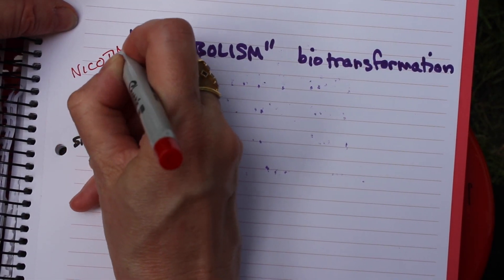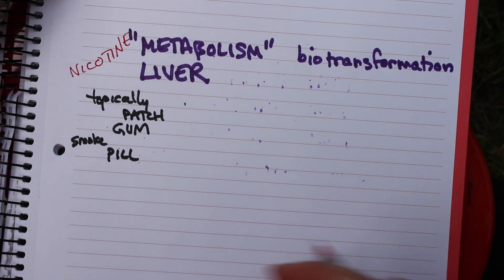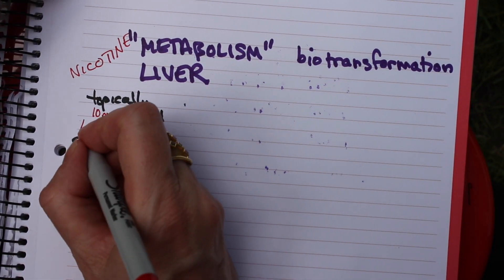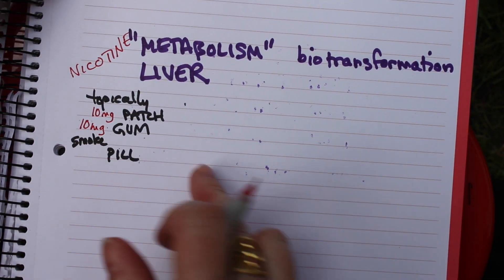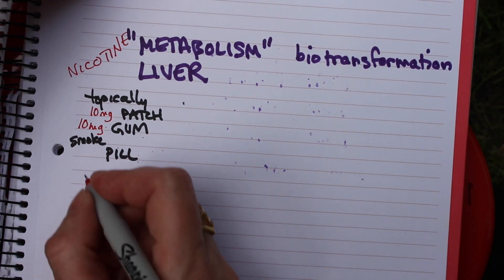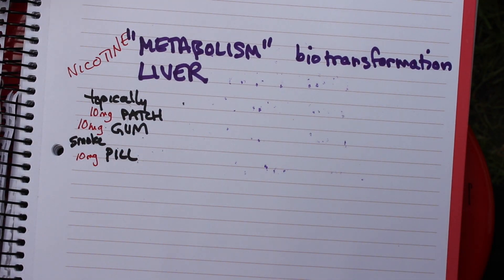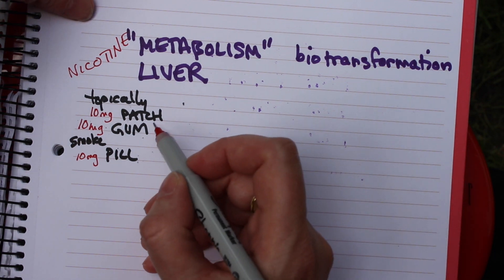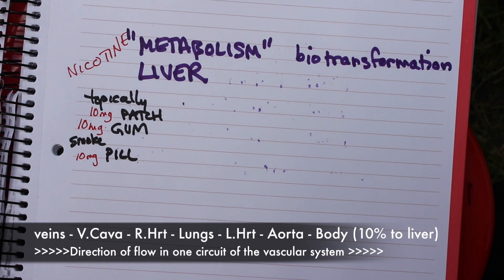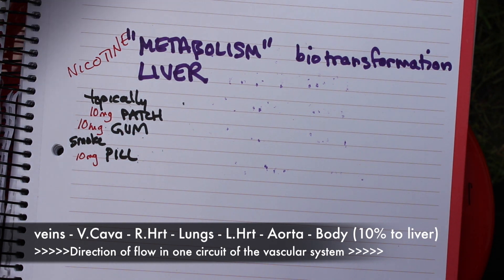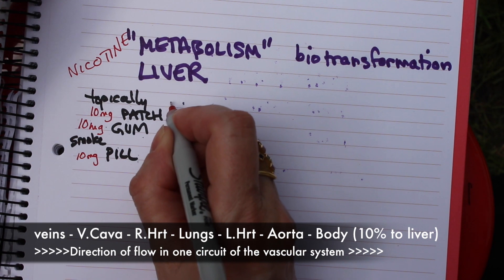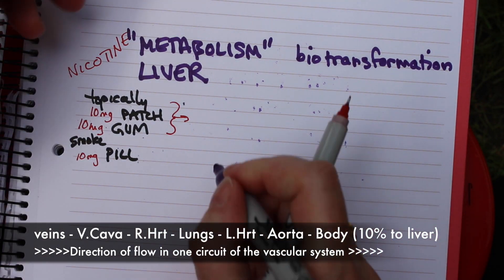Let's say you make a patch with 10 milligrams of nicotine, or some gum that's 10 milligrams. The gum is chewed and the saliva is absorbed through the mouth — that's how gum works. Or you could give it as a pill that the patient swallows. If you give the nicotine as a patch or gum, the drug is absorbed through the skin or the mucous membranes of the mouth, then the veins collect it, it goes to the vena cava, right heart, lungs, left heart, body, and then some percentage — let's say 10% — goes to the liver.